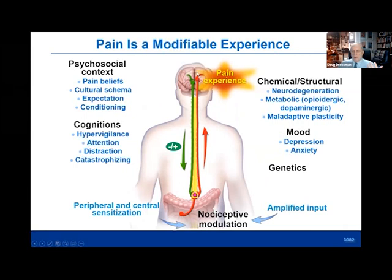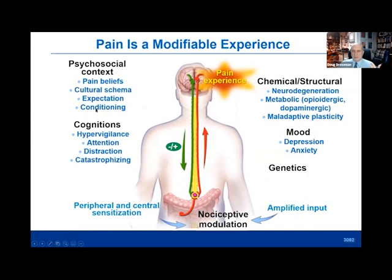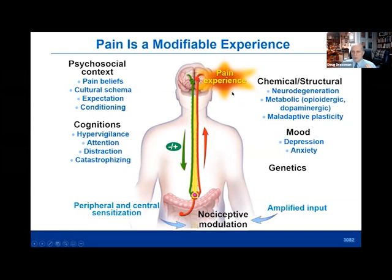This is modified by brain factors — the psychosocial context, expectation, and conditioning. If it's positive expectation and positive conditioning, that's placebo; if it's negative, it's nocebo. A patient who's had a bad experience with a medication may never want to go on that medication or any like it — and if they do, they get side effects. The cognitions that Miranda will address can affect the pain experience and pain behavior. This can lead to structural changes in the brain, spinal cord, and even in the gut, creating a neuroplastic situation where you can have disruption and degeneration of brain cells, or you can have enhancement and growth.